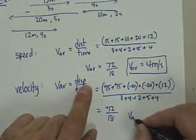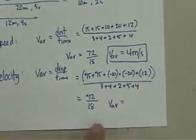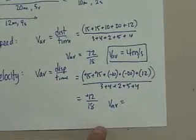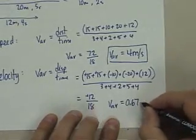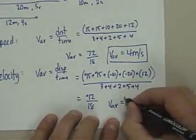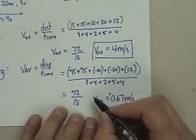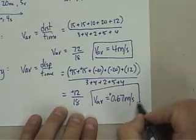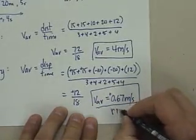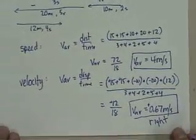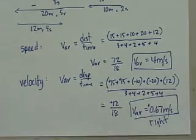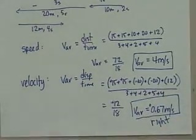So your average velocity is going to be 12 over 18, which is 0.67 meters per second. This is positive, so you can leave it as positive, or you can indicate that positive means right. But you need to have that direction because it's a velocity. So there you go, lots of information about distance, displacement, speed and velocity. There you go.